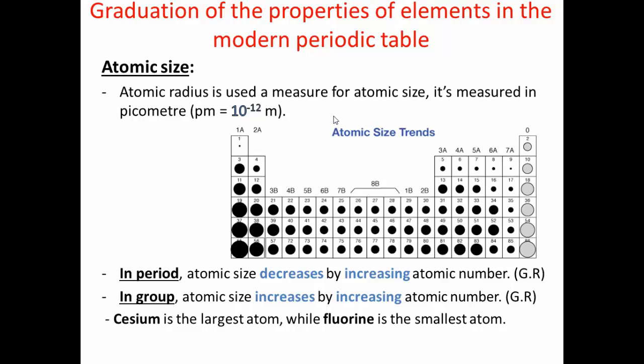As we can observe in the following figure, going from the left side to the right side, we observe that atomic size decreases. Comparing each element with the previous one, we observe that its atomic size decreases. Because going from the left side to the right side in the modern periodic table in a period, each element increases by one proton compared to the previous one, which increases the positive charge of the nucleus as well as the negative charge of electrons revolving around the nucleus. This increases the attraction force between the positive protons inside the nucleus and the negative electrons revolving around it. So, in a period, atomic size decreases with increasing atomic number.